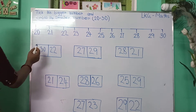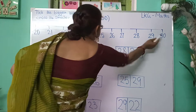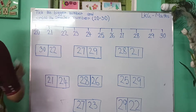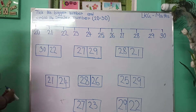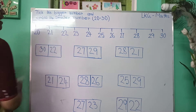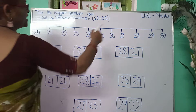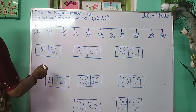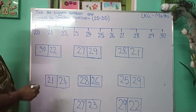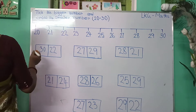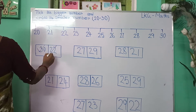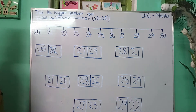Where is 30? Here is 30. And what is 22? Here is 22. Which have I written first? I have written 22 first and 30 last. So, 22 is the smaller number and 30 is the bigger number.